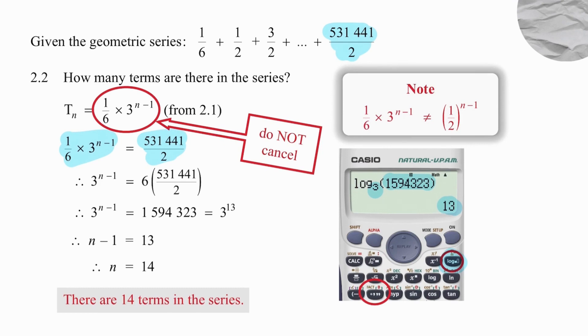Alternatively, you can also use the fact button, depending on which calculator you have. So if you have a look at that, if you were to type in this value, 1,594,323, then press the equal button and then fact, it simply pops out 3 to the power of 13. So decide which method you want to use. Equating and solving gives you n equal to 14.